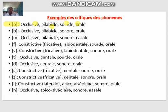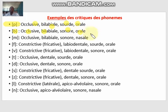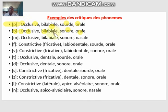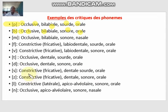Now for 'b': it is occlusif the same way, bilabial the same way, but there IS a vibration in the vocal cords — so we call it sonore. It is still oral. So if you are asked to distinguish 'p' from 'b,' the key difference is that 'b' is sonore whereas 'p' is sourd because there is no vibration in the vocal cord for 'p.' Now let's look at 's' and 'z': these are constrictifs — also called fricatives — dental, and the difference is that 'z' is sonore while 's' is sourd. I'll stop the video here. Go through the examples, subscribe if you haven't, and I'll see you in the next one.